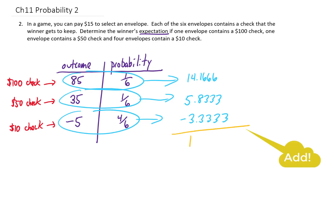If we do that, I'm getting 16.6666 repeating. And if we round to the nearest cent, that is an expected value of $16.67.